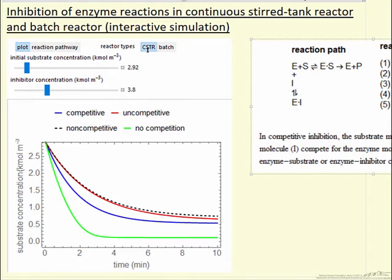We can either look at a CSTR or a batch reactor. And as I mentioned, if we select pathway, then we can see the pathway for each of the behaviors shown here.